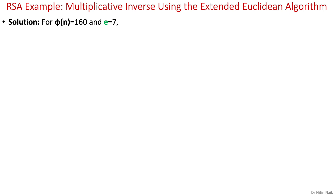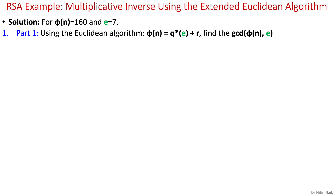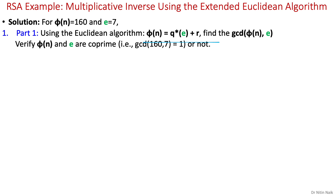We need two values: phi(n) = 160 and e = 7. We'll perform calculations using the extended Euclidean algorithm in two parts. In part 1, we'll find the GCD of the two numbers using the standard Euclidean algorithm: dividend = quotient × divisor + remainder. We verify that if the GCD is 1, then both numbers are co-prime.